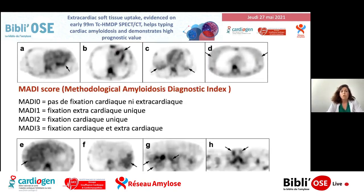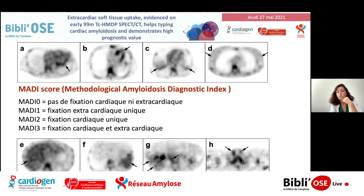Voici le score MADI, assez simple à calculer. Score 0 : aucune fixation ni cardiaque ni extracardiaque. Score MADI 1 : uniquement des fixations extracardiaques — fixation pulmonaire, des tissus mous, hépatique, splénique, du péritoine, ou de la thyroïde. Le score MADI 2 : fixation cardiaque unique, sans fixation extracardiaque. Et MADI 3 : fixation cardiaque et extracardiaque.